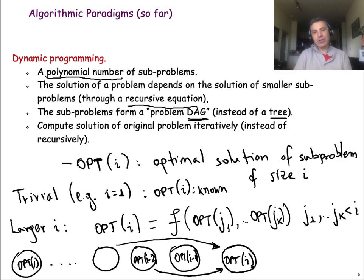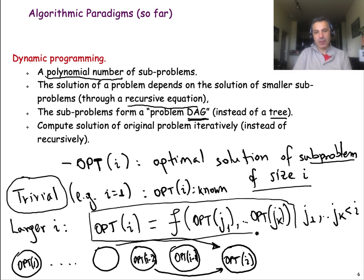So in order to solve a dynamic program, you need to do two things. One is to figure out which are these sub-problems. That's not always trivial. And then you need to come up with this recursion that expresses how you can solve a problem of a given size as a function of problems of smaller size, which can be represented, as I said, with a DAG.